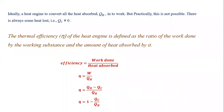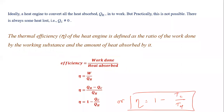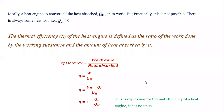Efficiency can also be written as 1 minus Qc divided by Qh, or in terms of temperature: efficiency equals 1 minus Tc divided by Th. Thermal efficiency has no unit. The maximum value of thermal efficiency is 1, but this is not achievable for any real engine — efficiency is always less than 1, or less than 100 percent.